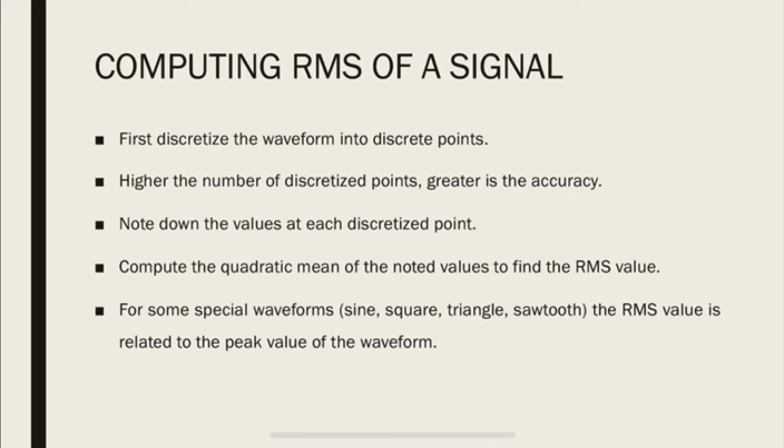So what are the steps for computing the RMS? First, we discretize the waveform into discrete points. This is also digitization of the signal. Greater the number of points, greater is the accuracy. We note down all the values at each discretized point and then compute the quadratic mean to find the RMS value.